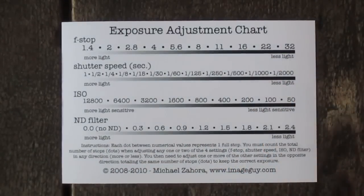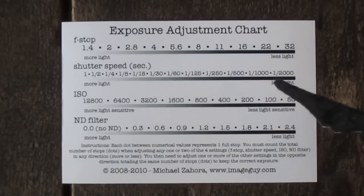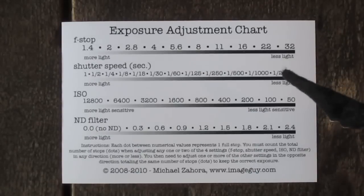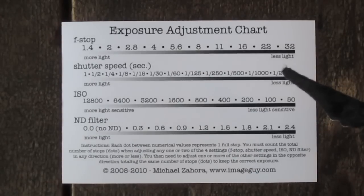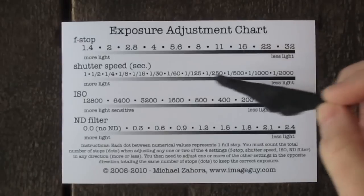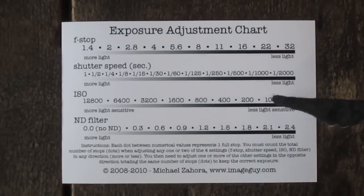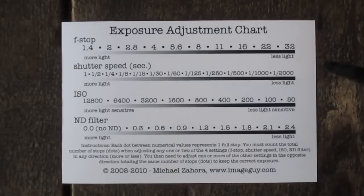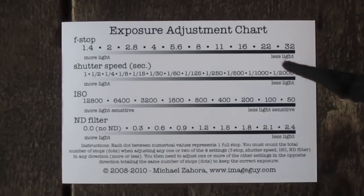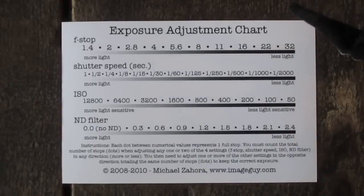Each dot in between the numeric values represents one full stop. So for example, let's say you're shooting at f/16 at a 60th of a second at 100 ISO, with no neutral density filters on the camera, and you want to move your f-stop down to 5.6 to get a shallower depth of field.